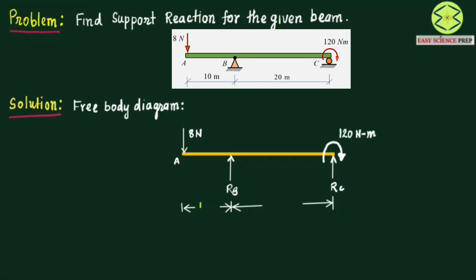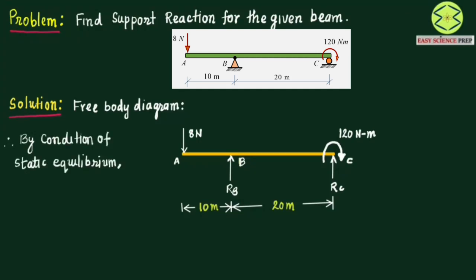The distance between point A and B is 10 meters and the distance between point B and C is 20 meters. This is the free body diagram we have drawn. Now we have to find the support reactions RB and RC using the condition of static equilibrium, which we have already discussed in a previous video.